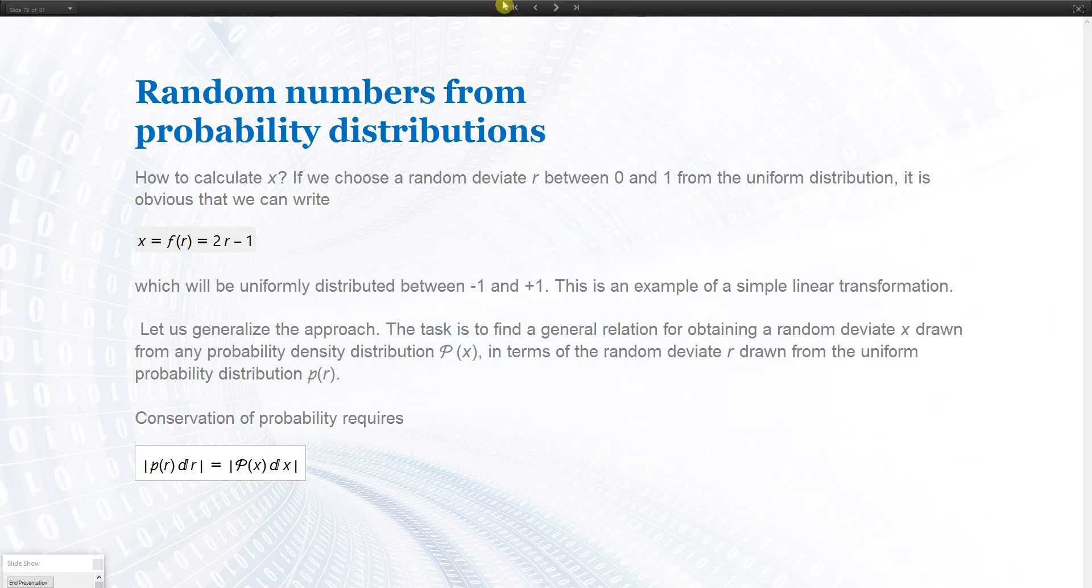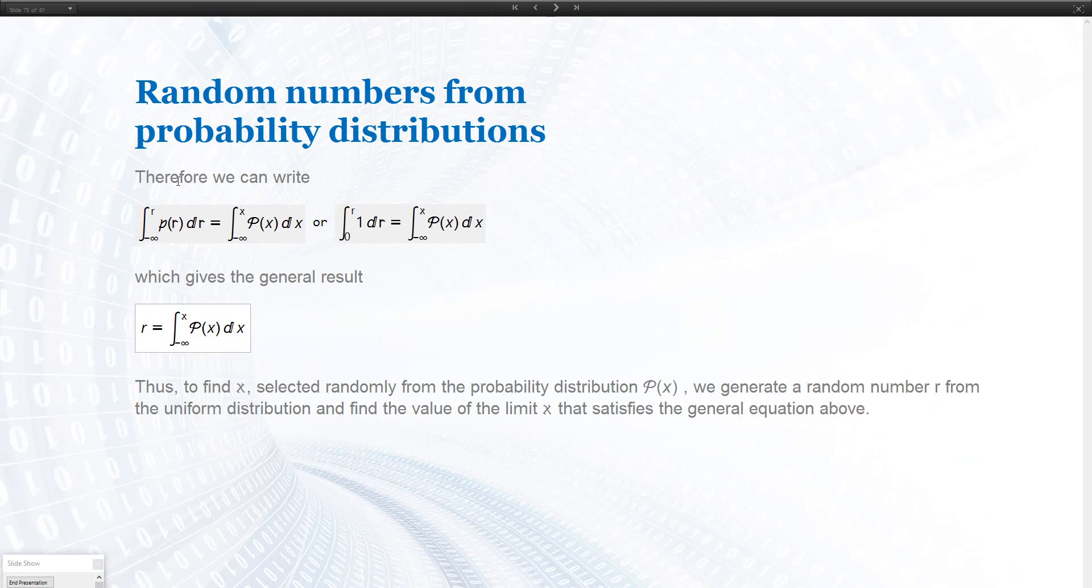Starting from this, we can take the integral, always from minus infinity to r over P(r) dr, and here from minus infinity to x over P(x) dx. And if we put in the definition of our uniform distribution, then we get here this integral. On the right-hand side, this is general. And this integral is r. So we find r is defined as the integral, the CDF of P(x) dx.